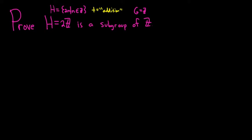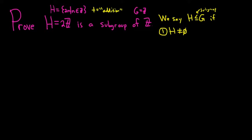A subgroup of a group is a subset that's also a group under the same operation. However, there is a theorem that we can use in these proofs. We say h is a subgroup of g — using subgroup notation — if three conditions are met. The first condition is that h is not empty. The second condition is that h is closed under the group operation.